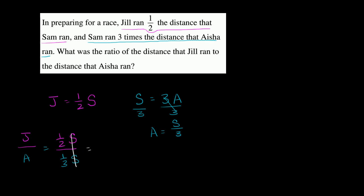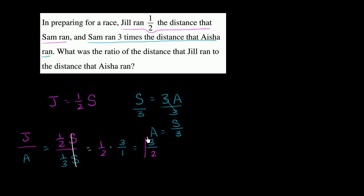So this is going to be equal to one-half. When you divide by one-third, that's the same thing as multiplying by three over one. So one times three is three, and two times one is two. Therefore, the ratio of the distance that Jill ran to the distance that Aisha ran is three to two, or three-halves.